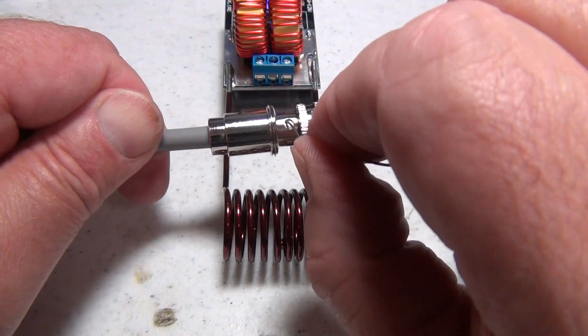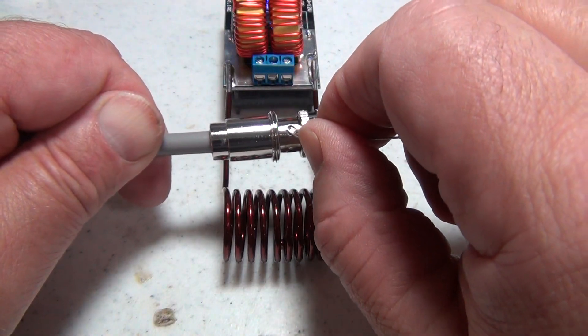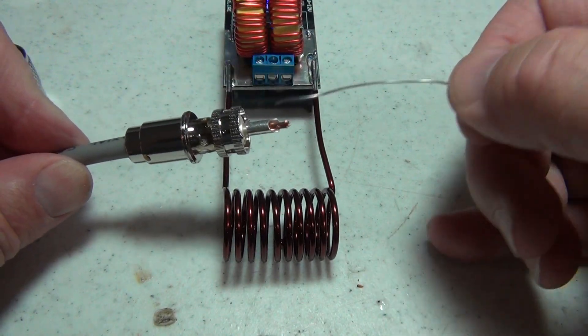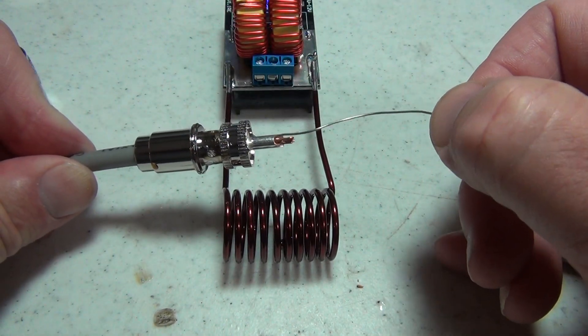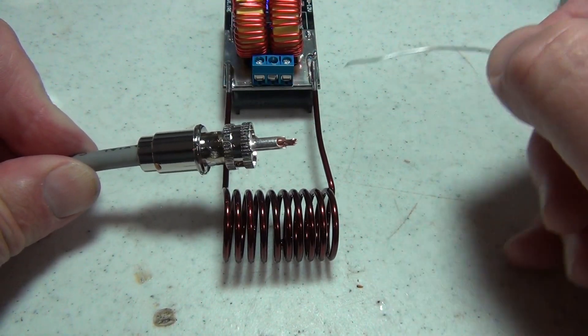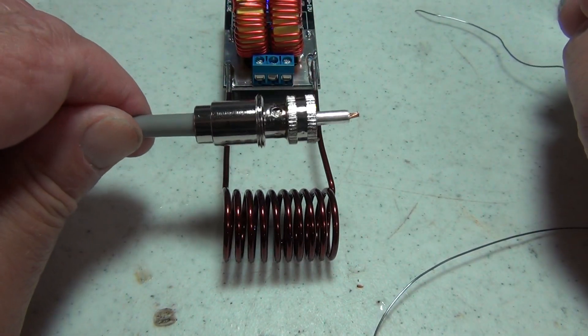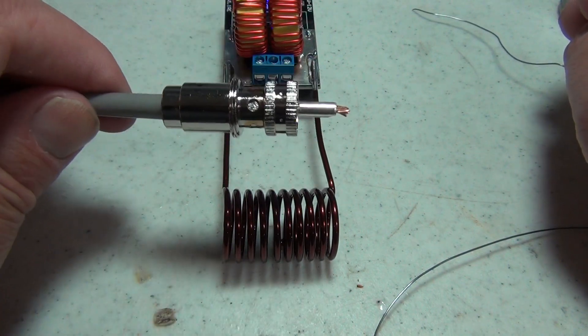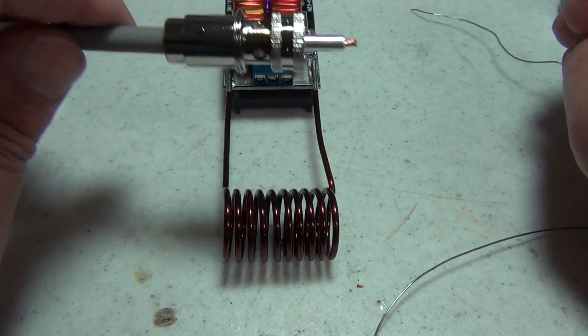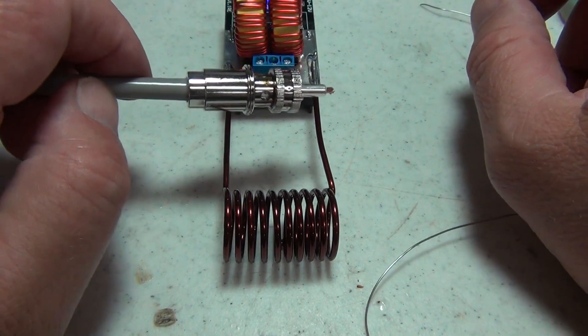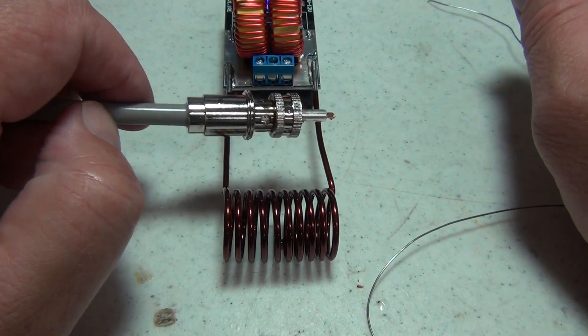You can see I got a nice solder flow all the way around and that connector is on. This didn't get warm enough to melt the solder, but that's easily done with an iron. That really looks pretty nice and the connector is in good shape—not too hot, a little warm.